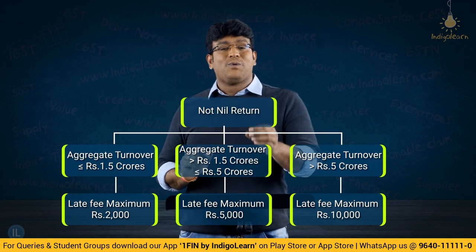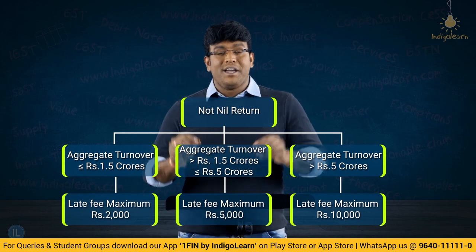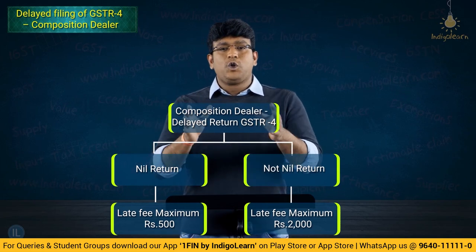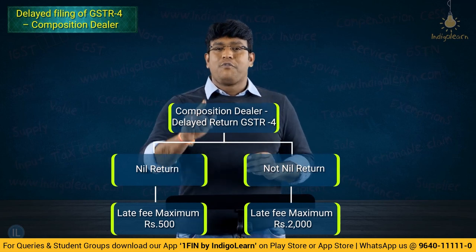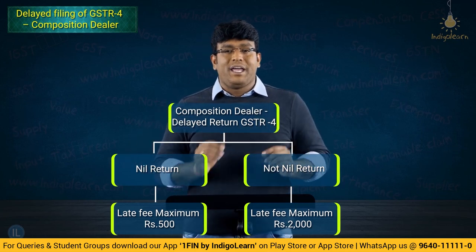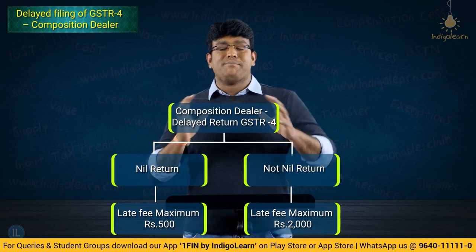This is an interesting amendment with respect to maximum late fees for GSTR-1 and GSTR-3B. Also, with respect to GSTR-4, which is filed annually by composition-registered persons: if it is a nil return, maximum late fees is 250 under CGST and 250 under SGST — maximum 500. But if it is not a nil return, maximum late fees is 1,000 under CGST and 1,000 under SGST — maximum 2,000. They have simplified and reduced the maximum late fees for delayed filing of GSTR-1, GSTR-3B, and GSTR-4.